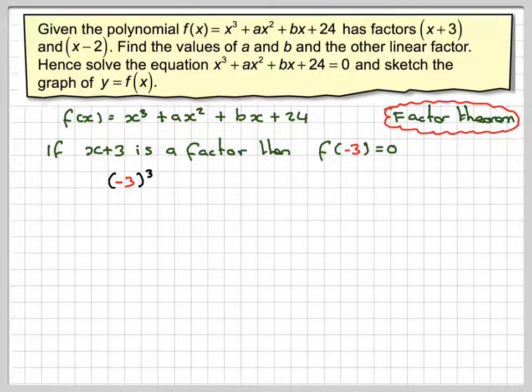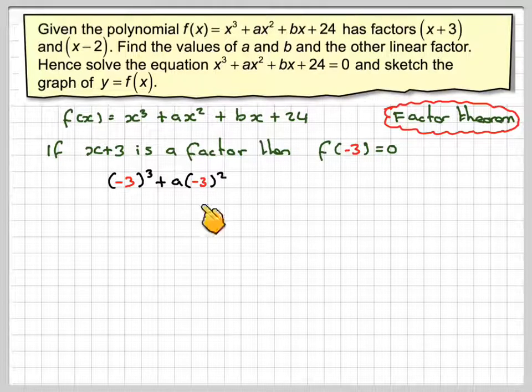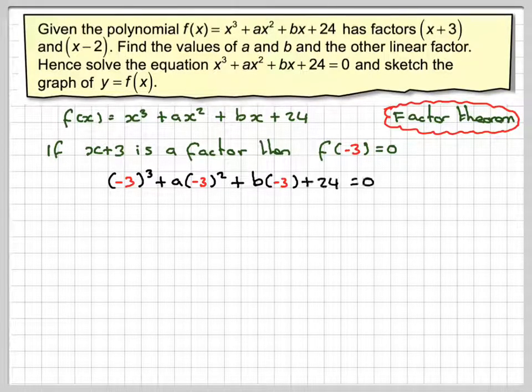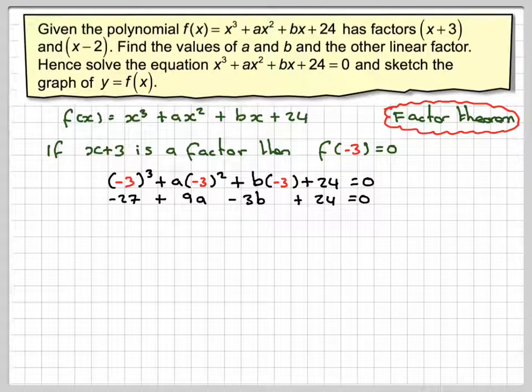If we substitute in -3, we get (-3)³ + a(-3)² + b(-3) + 24 = 0. -3 cubed is -27, -3 squared is +9a, -3b + 24 = 0.